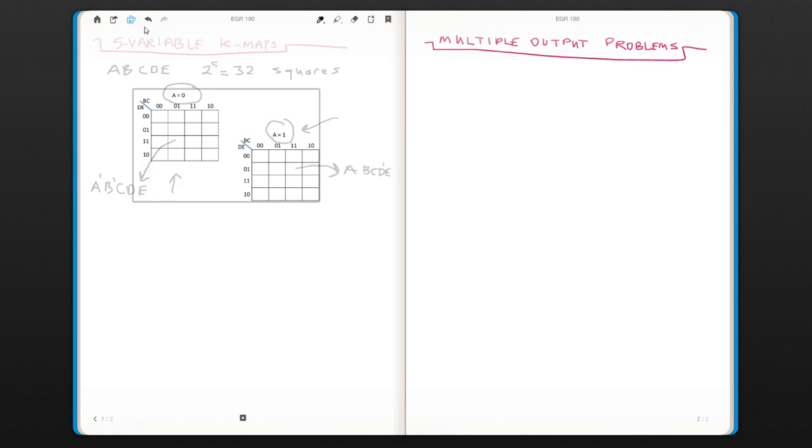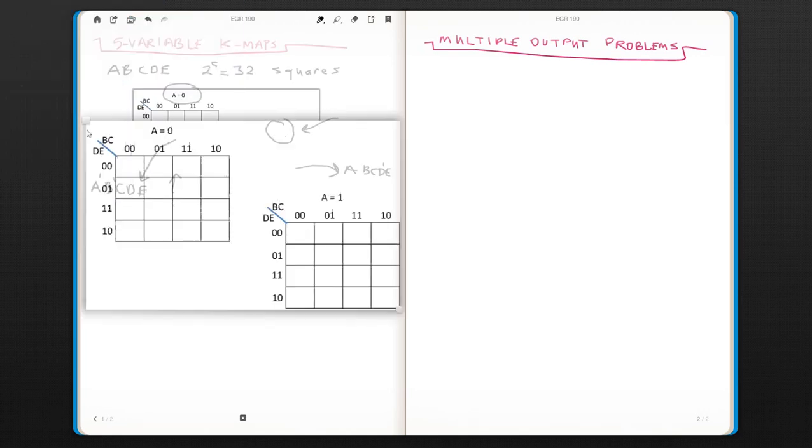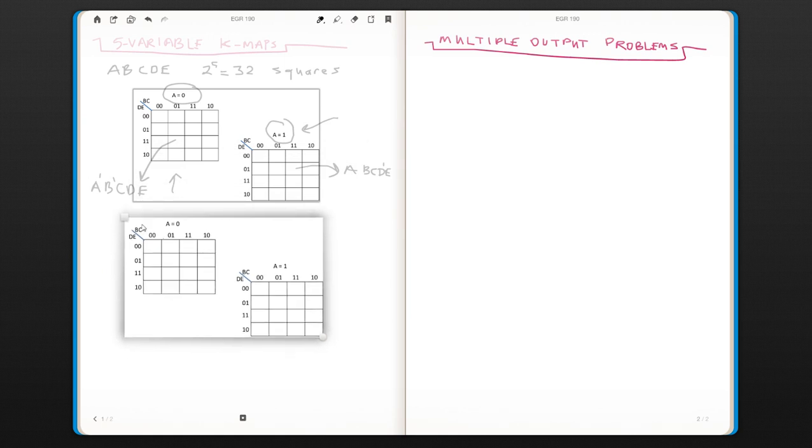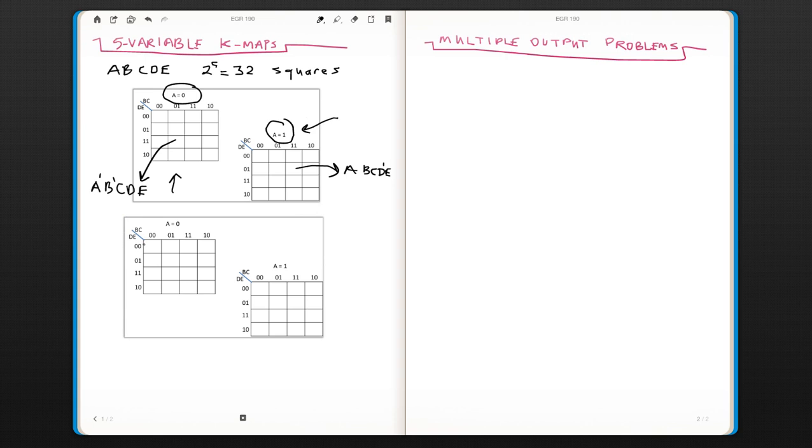So the simplification is again the same. The idea is same. You just need to think almost like a 3D. So let's say we have a map like this.